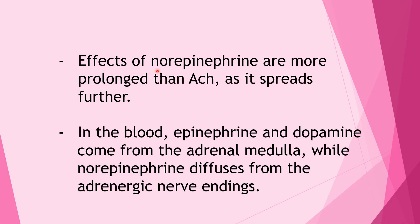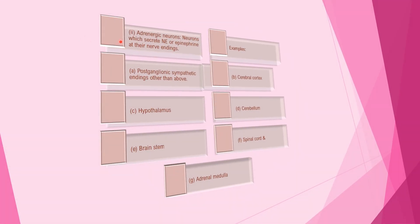The effects of norepinephrine are more prolonged than acetylcholine as it spreads further. In the blood, epinephrine and dopamine come from the adrenal medulla, while norepinephrine diffuses from adrenergic nerve endings. Adrenergic neurons — neurons which secrete norepinephrine or epinephrine at their endings — include postganglionic sympathetic endings and neurons in the cerebral cortex, hypothalamus, cerebellum, brainstem, spinal cord, and adrenal medulla.